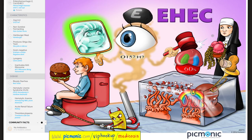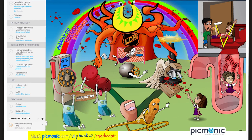EHEC — enterohemorrhagic, bloody diarrhea E. coli — also known as O157:H7. Contaminated undercooked hamburger is the classic source. It produces a shiga-like toxin (not exactly shiga toxin, which Shigella produces). Also causes bloody diarrhea and HUS. HUS patient is usually a child; triad includes microangiopathic hemolytic anemia with helmet cells (schistocytes), thrombocytopenia, and acute renal failure. LDH is elevated. Treatment is supportive care; dialysis in severe cases.